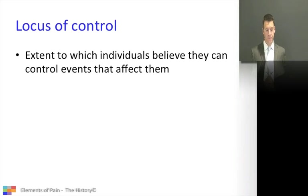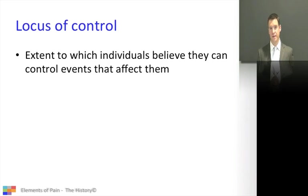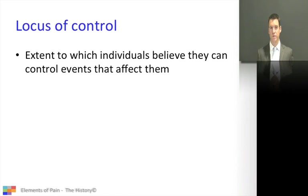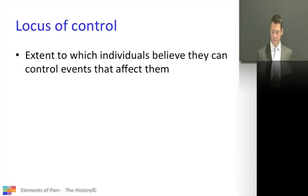The locus of control: the definition is the extent to which individuals believe they can control the events that affect them. If you're motivated, proactive, and face things head on, you've got an internal locus of control — believing that what you do has direct implications on where you are in the world. Those that feel they've got nothing they can do are generally the pessimists, and a lot of our patients have pessimistic thinking. This is something we can educate and hopefully change.